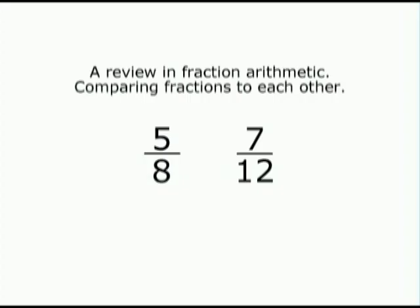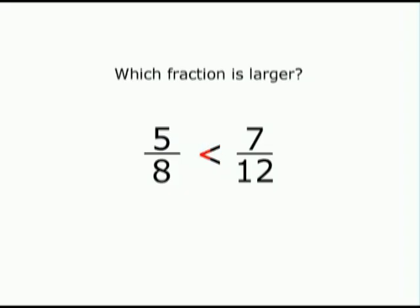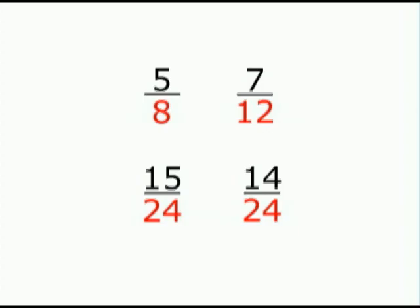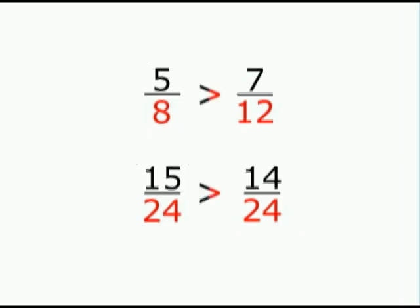When you learned fraction arithmetic, you should have learned how to compare fractions to each other. If you wanted to compare two fractions to see which is larger — is 5 eighths less than 7 twelfths, or is 5 eighths larger than 7 twelfths? — you have to find the lowest common denominator for both fractions, then raise them both up to that lowest common denominator. Here the lowest common denominator for 8 and 12 is 24. 5 eighths can be raised to 15 twenty-fourths, and 7 twelfths can be raised to 14 twenty-fourths. Now you just look at the tops to see which is bigger. 15 is larger than 14, so 5 eighths is larger and 7 twelfths is smaller.